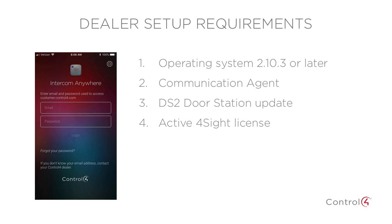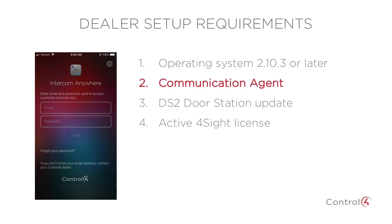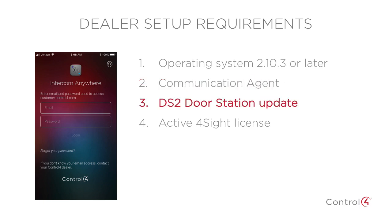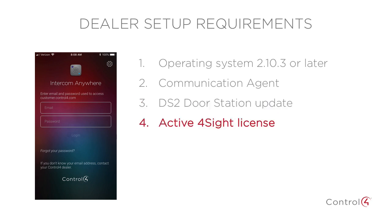Before you install the Intercom Anywhere app on your smartphone, contact your dealer — they will check your Control 4 system and make sure you have all the necessary updates. Four things must be in place: first, your dealer will make sure your Control 4 system is updated to OS 2.10.3 or later; next, they will ensure the communication agent is set up and configured properly; third, if you have a DS2 door station, they will update the software to work with Intercom Anywhere; and finally, they will confirm that you have an active ForeSight license.